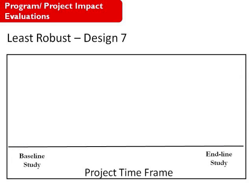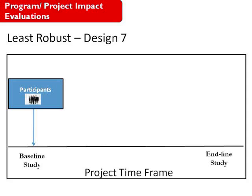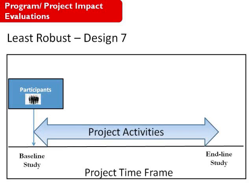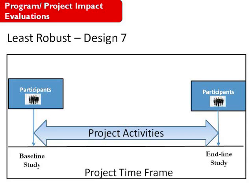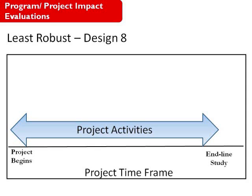Designs 7 and 8 are considered the least robust. In Design 7, we have a baseline and endline or follow-up study, but the baseline is conducted only among participants — the individual households that are going to benefit from our project. Then the activities are implemented, and at the end, a follow-up study is conducted again only among those who benefit from our project. Design 8 is the least robust: there is no baseline study at all. All the activities are implemented, and then at the end of the project, a follow-up study is conducted just among the participants.